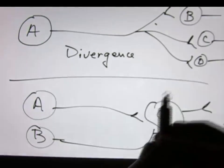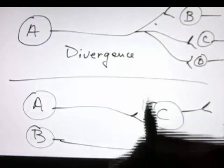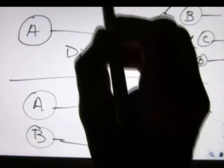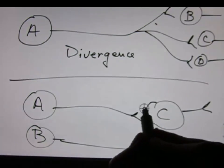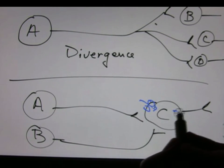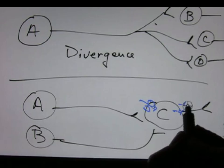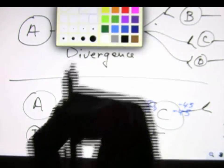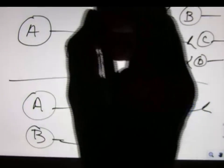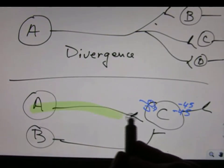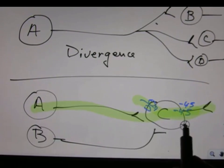Let's imagine that this one synapse allows in enough positive charge to get to minus 45. Then just A would cause an action potential in C.